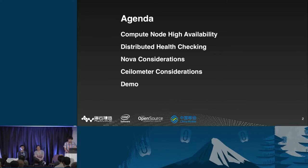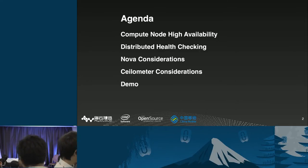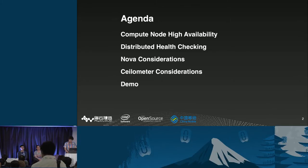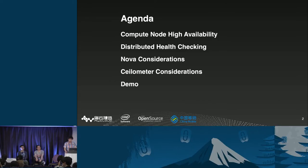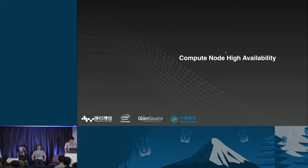Here is the agenda. Firstly, I'll give some context about why we are doing compute node high availability and what problems we solve, and explain how we implemented the very first version. Secondly, I'll discuss the problems in the first HA implementation and how we can make all the checks and heartbeats distributed. Then Alex Xu will give insights on what needs to be done in the Nova project, and Jingwei will share experience on handling HA events in Ceilometer. If we still have time, I'll show a live demo.